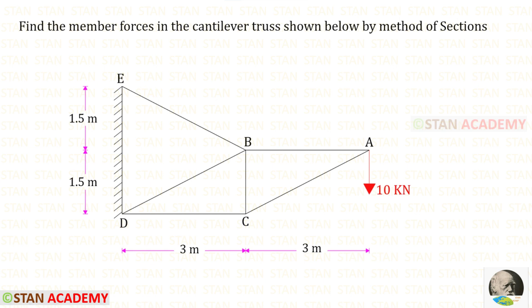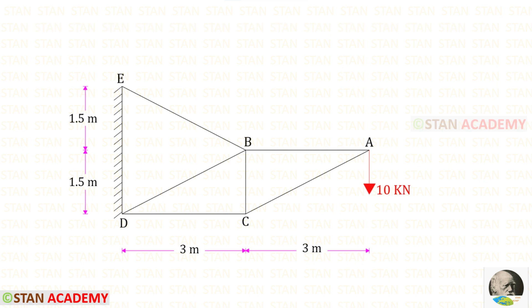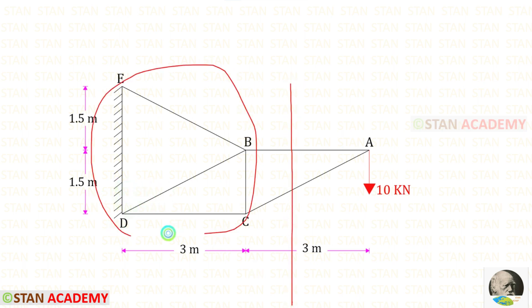Hello everyone, today we are going to analyze this cantilever truss by method of sections. I have analyzed the same truss by method of joints — you can click the link in the description and watch that video. In cantilever trusses, we have to be very careful when we make sections. We should not take the portion near the fixed end. If we make a section like this, we should not take this part; we only take the right-side portion, because on the left side we have the fixed end.